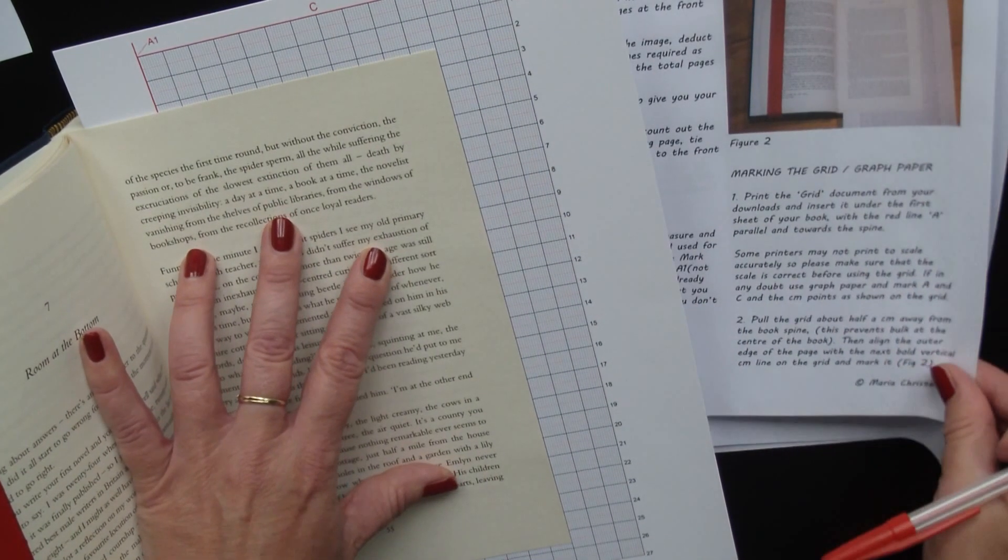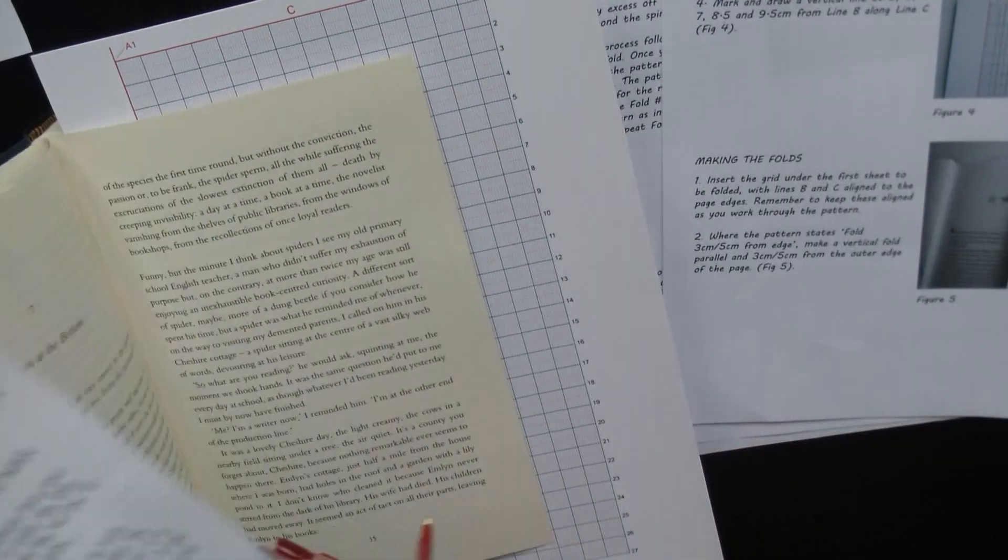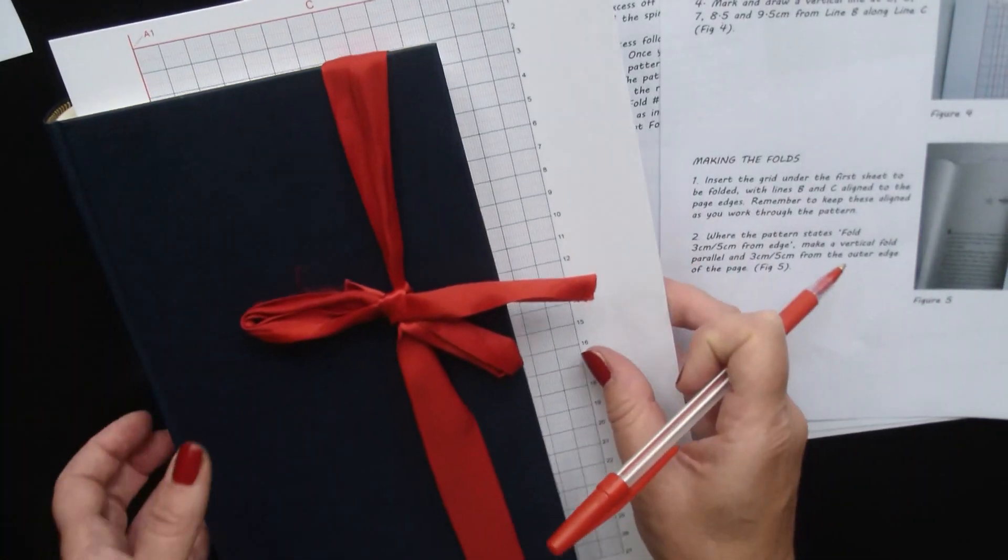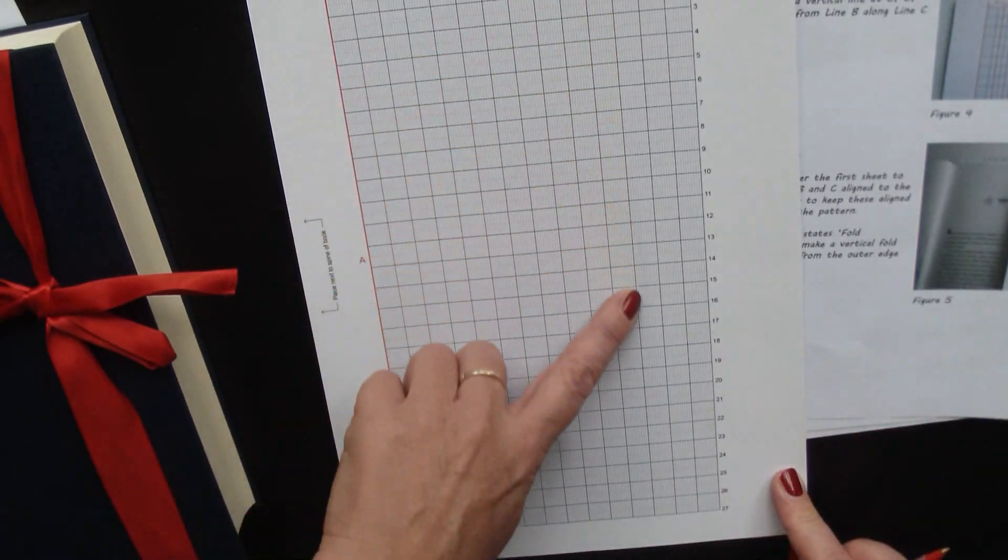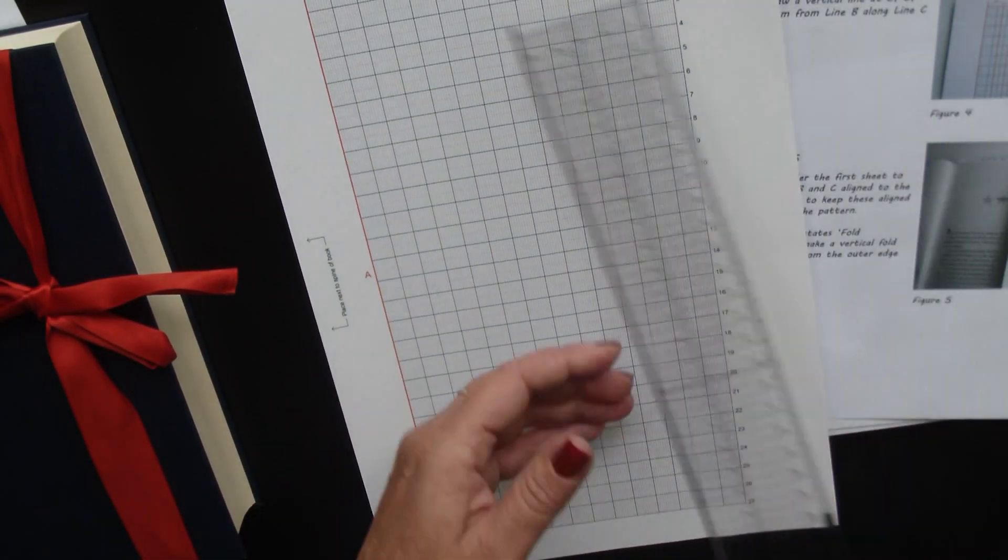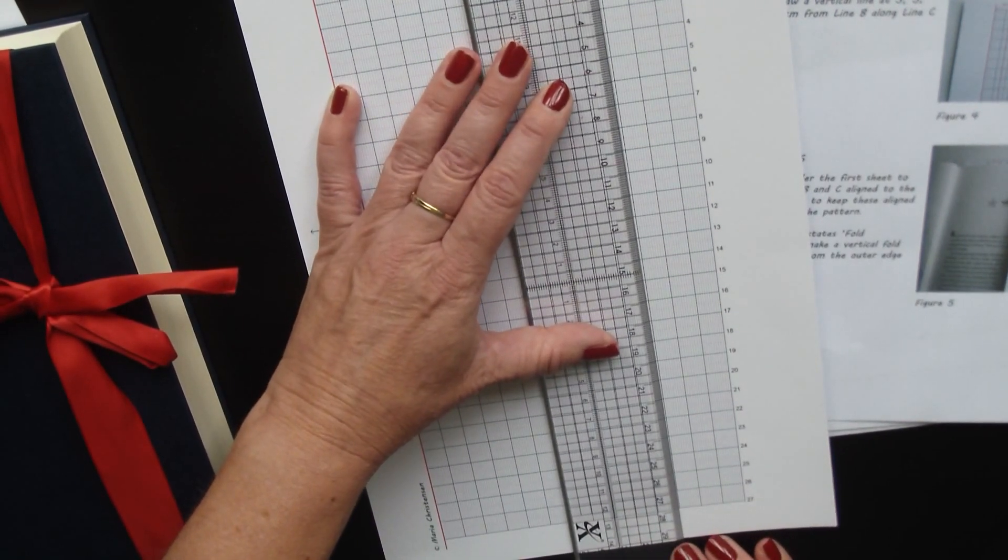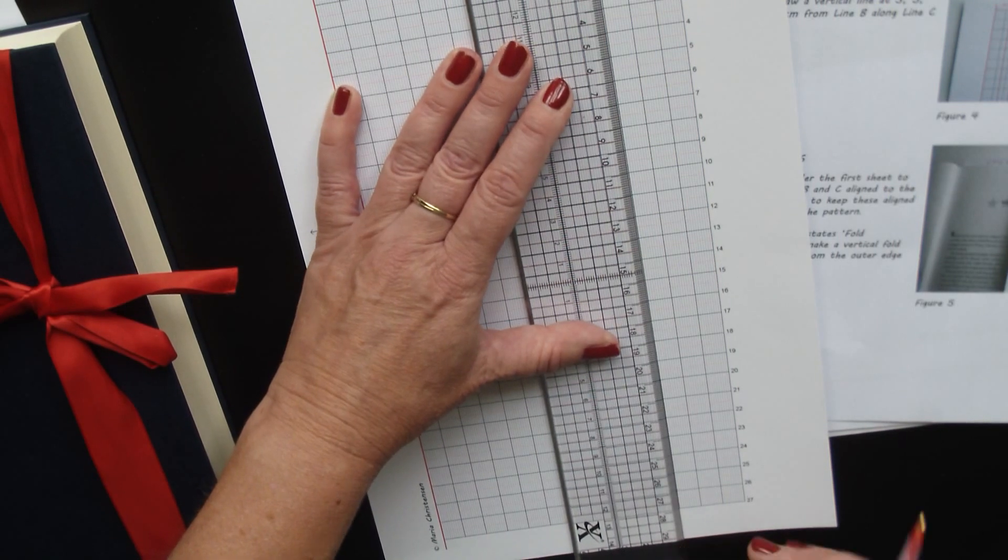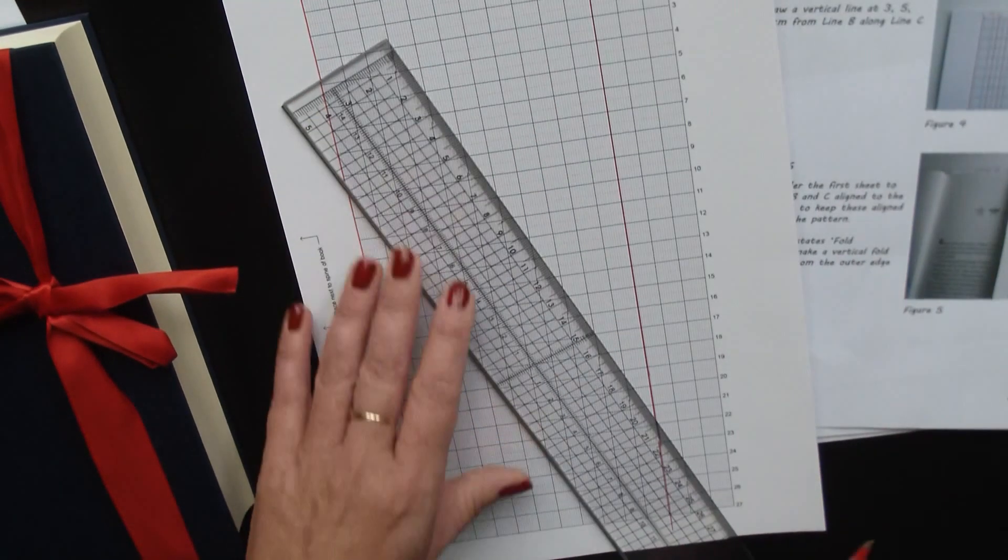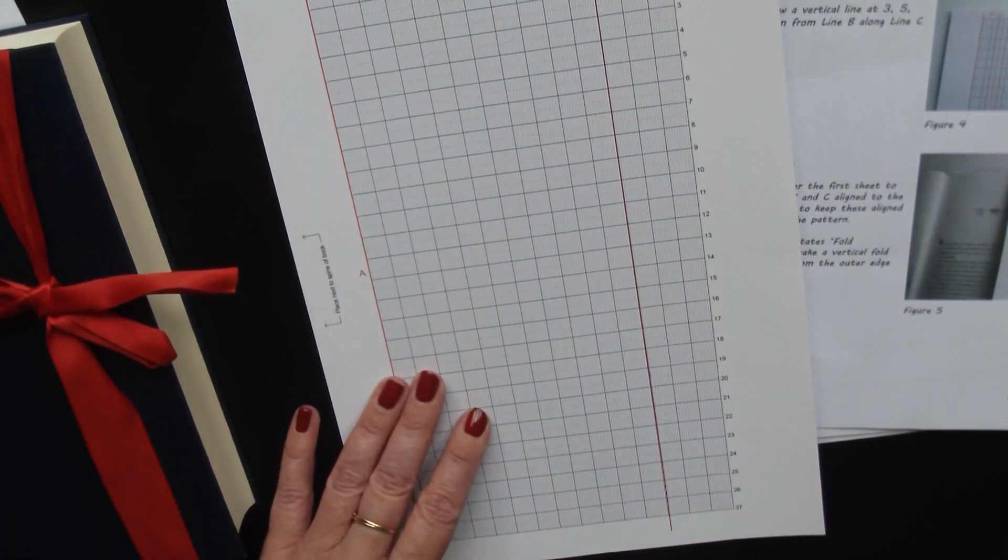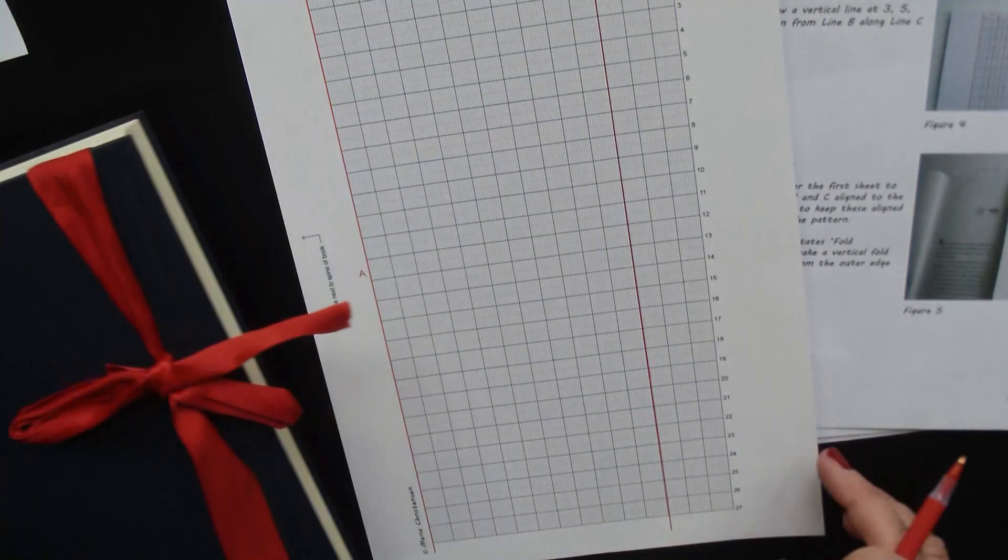Remove the grid, so you take it out of your book. What you want to do is highlight that line in any way you like, just so that you know where your B line is, because that's your reference point for the marking. Now obviously the B line will vary on position depending on the width of the book that you have.